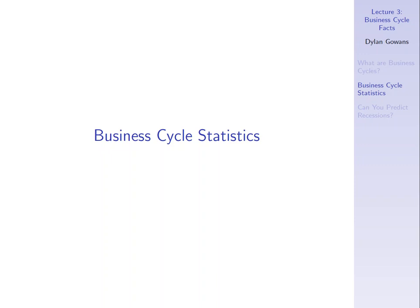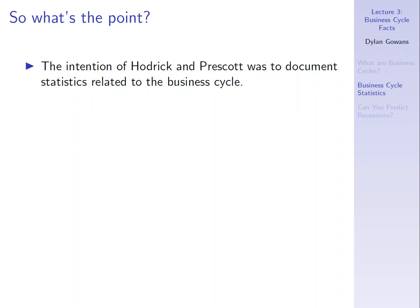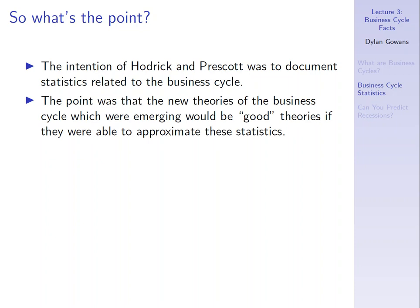We've seen how new classical economists define the business cycle as fluctuations around the trend, and how this differs from traditional views of business cycles as recessions and depressions. The intention of Hodrick and Prescott when they wrote this paper was to document statistics related to the business cycle, because they had new classical theories emerging and wanted to define what makes them good theories — ones consistent with the documented facts.